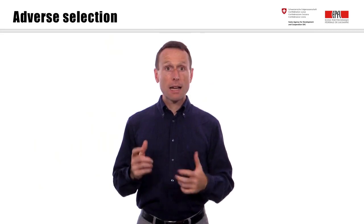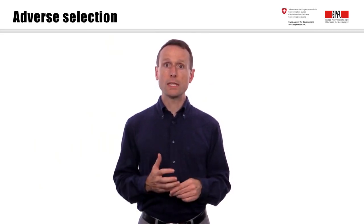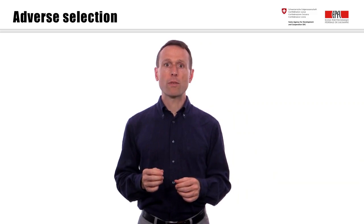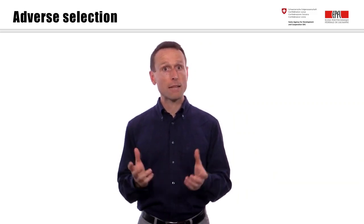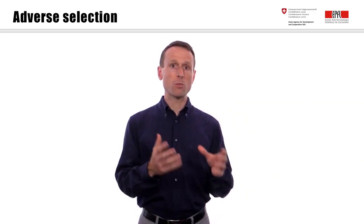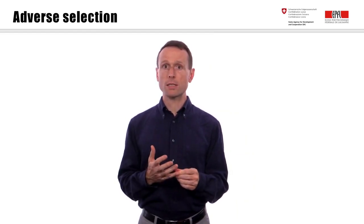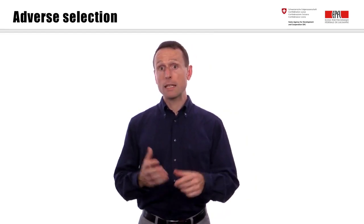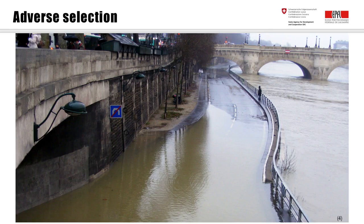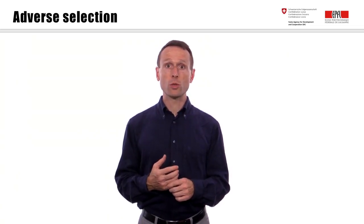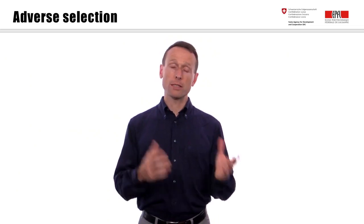Adverse selection occurs if an insurance company designs and prices an insurance product for the average member of a given community, but then ends up with clients that are more exposed to risk than the average. For example, in health insurance you don't want to insure only the elderly, obese smokers when you designed the product for a large community of mostly fit, young, middle-aged people. Or, in the case of floods, you don't want to end up insuring only those living on a river bank. Adverse selection therefore also has to do with information asymmetry between the insurer and the insured party.